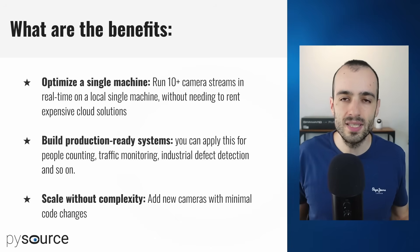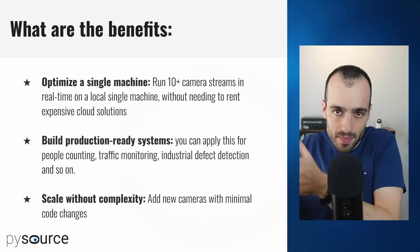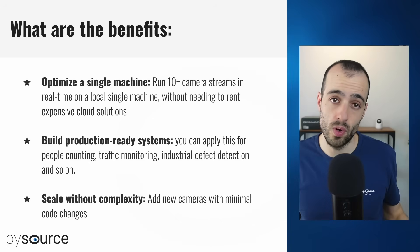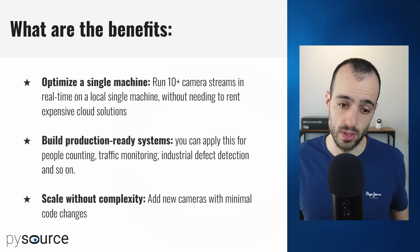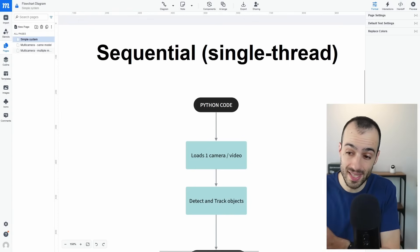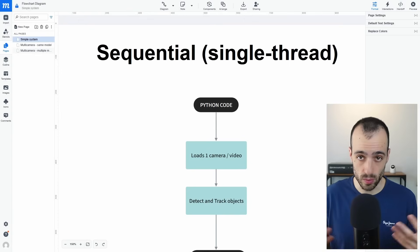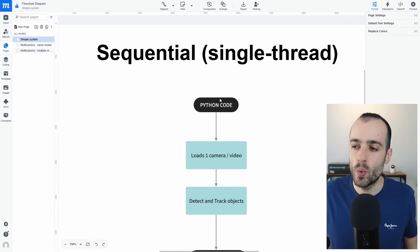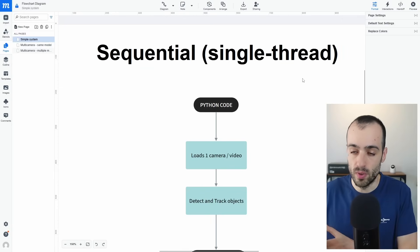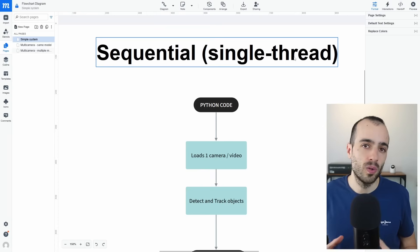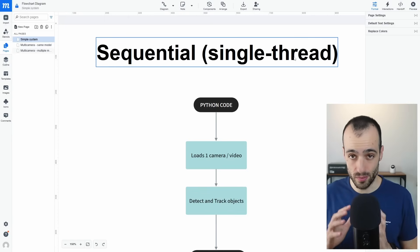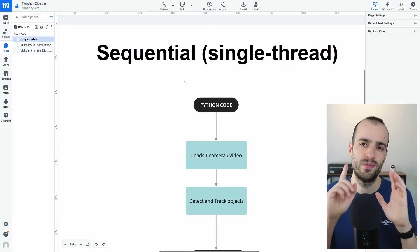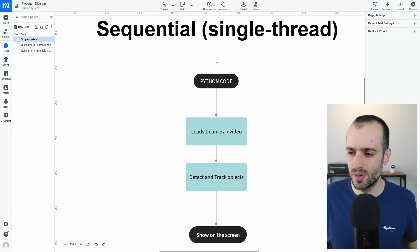Let's start by seeing a simple solution and then explain the workflow of more complex ones. Let's understand the difference between a solution that runs a single camera versus multiple cameras. The most common approach I see — even in some companies — is the sequential single-thread mode, which is not very optimized unless you have only one camera.